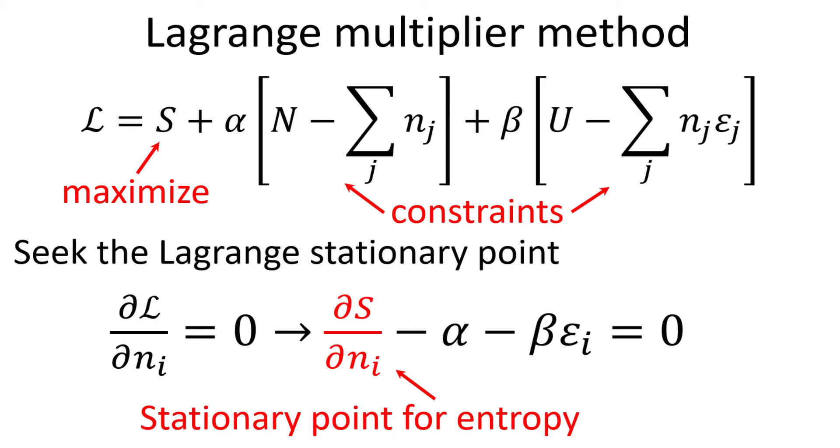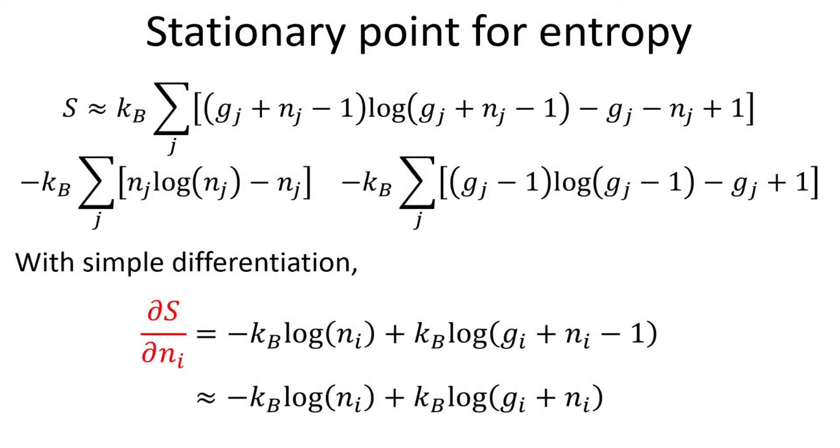To proceed, we first have to find the stationary point for the entropy S. Recall the entropy expression we derived earlier with Stirling approximation. We can work out the stationary point for the entropy by taking differentiation with respect to n_i. The results are shown here.